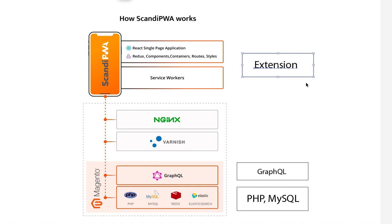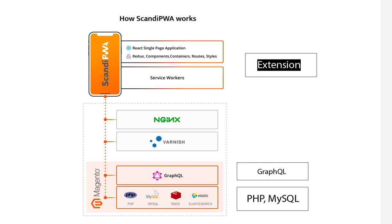So we have to create a frontend extension. Scandi PWA is currently the only PWA solution that allows extending any part of the theme and also the service worker. It's not an override — it's a correct way, an extending of available functionality. It's available since version 3, and there are tutorials and documentation on this. So we are writing an extension that includes certain styles, a component, a container to manage the data, possibly tapping into the application's global state. Let's call it, on a project management level, a frontend extension — a Scandi PWA extension.